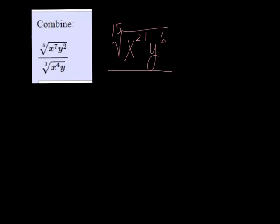And at the bottom I need to multiply everything by 5 because 3 times 5 is 15, so 4 times 5 is 20, and y to the 1st raised to the 5th power is just y to the 5th.